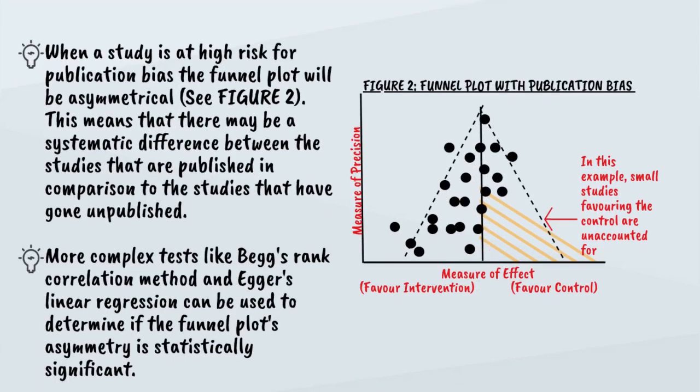This shows that all studies ranging in precision and effect size have been represented in the research. When a study is at high risk for publication bias, the funnel plot will be asymmetrical, meaning there may be systematic differences between the studies that have been published compared to those that have gone unpublished. In Figure 2, we can see that in this example, the small studies favoring the control are unaccounted for.